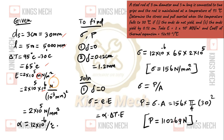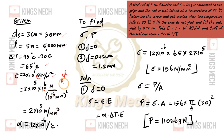Substituting the values: 1 meter is nothing but 10 power 3 mm, so the units work out — 10 power 6 minus 6 cancel, giving 10 power 5. So E is 2 into 10 power 5 Newton per mm square. We have to find stress and load.